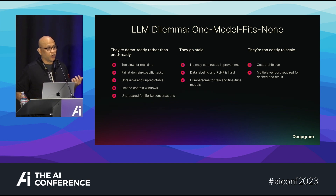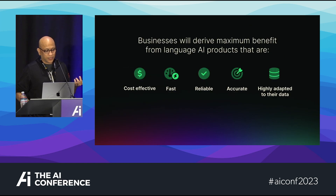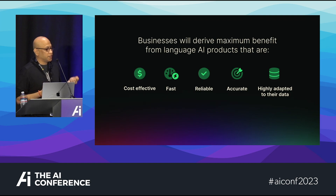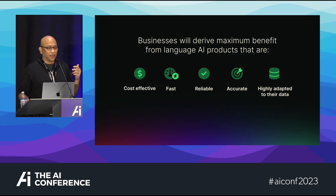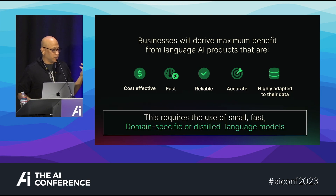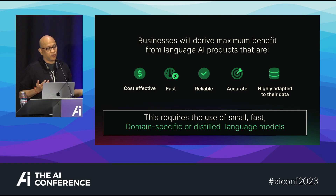So what's the solution? What do we want? We want cost-effective, fast, reliable, accurate, and highly adapted data models. What we realize is we require domain-specific or distilled step-by-step models. Let me share why — let's take the example of a call center.